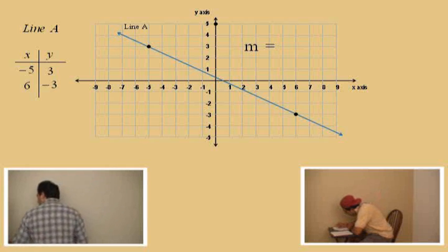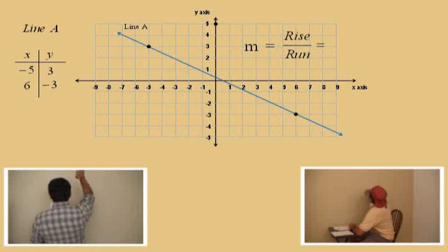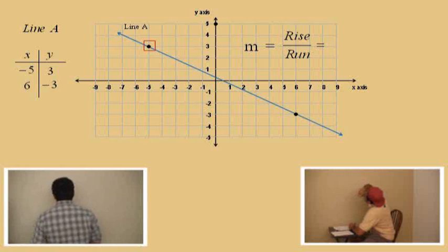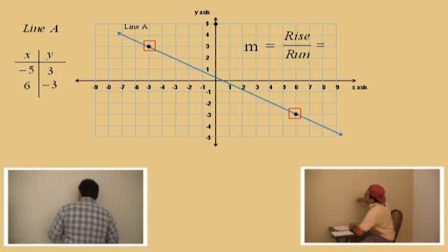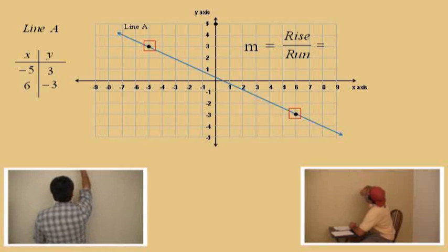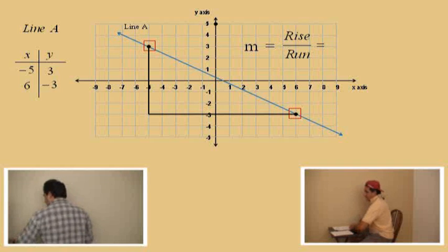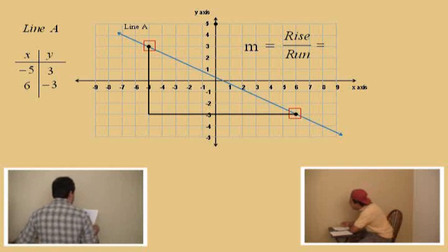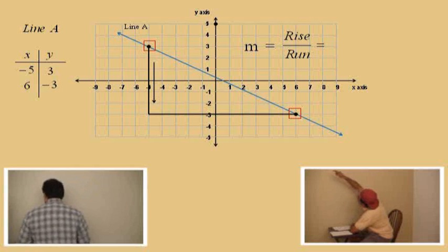Let's go ahead and look for the rise over run starting at this point up here. Our goal is to get from that point over to that other point. The first thing we do is move up or down. We're going to start at this point, Charlie. To get to that other point, you realize we're going to have to come down, and then to the right. So yes, we have to come down and then move over to the right. That's our path — those big black lines.